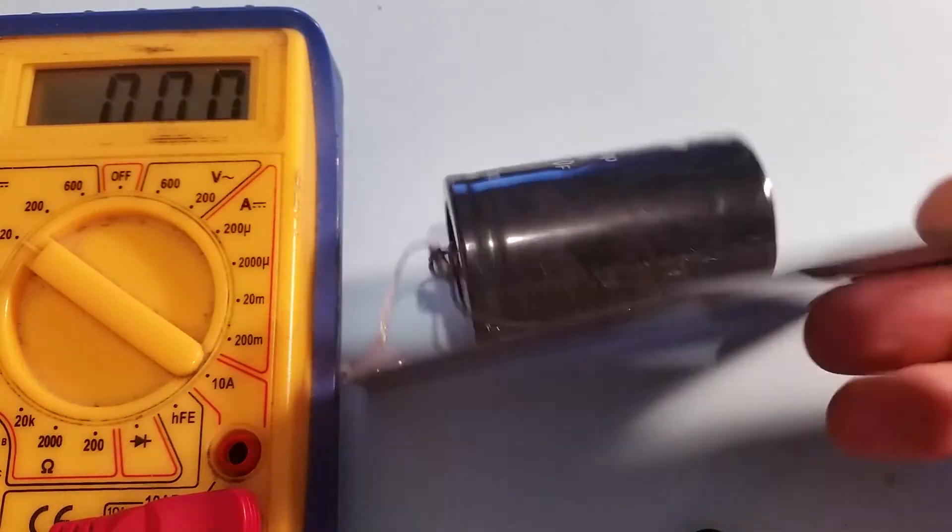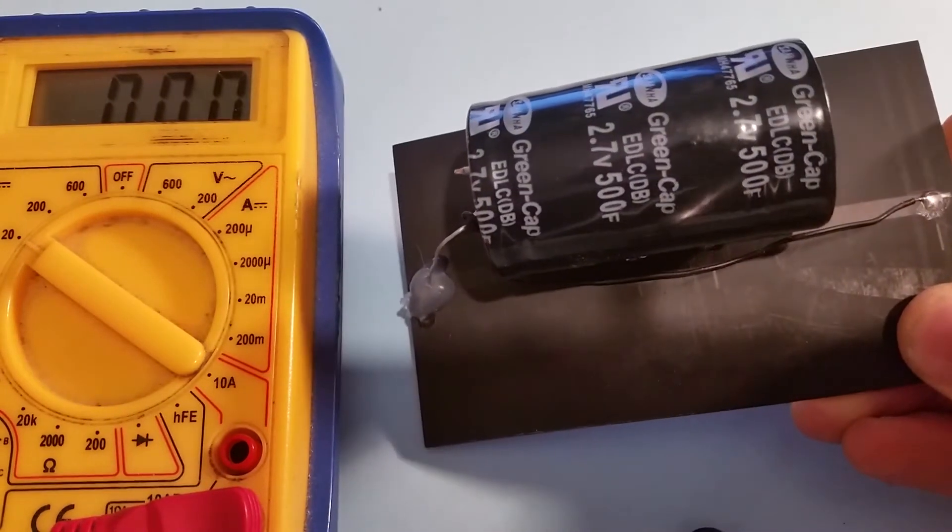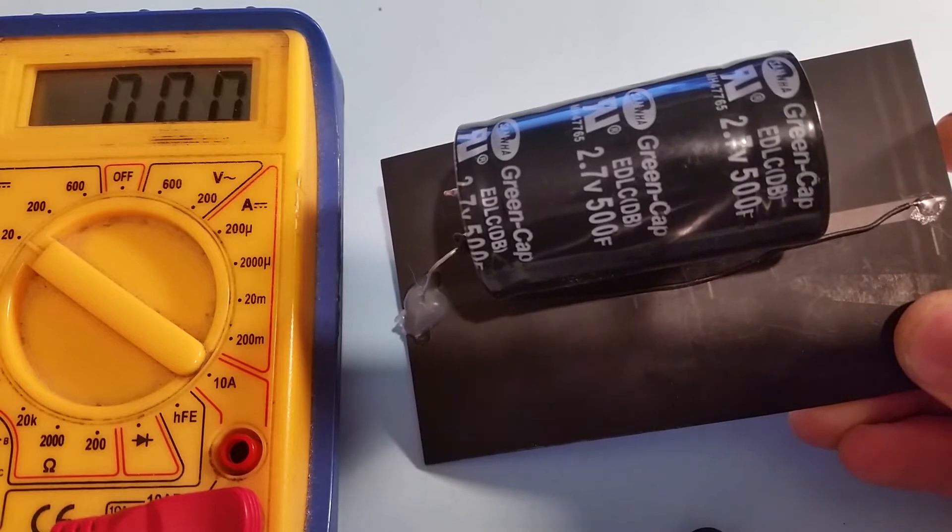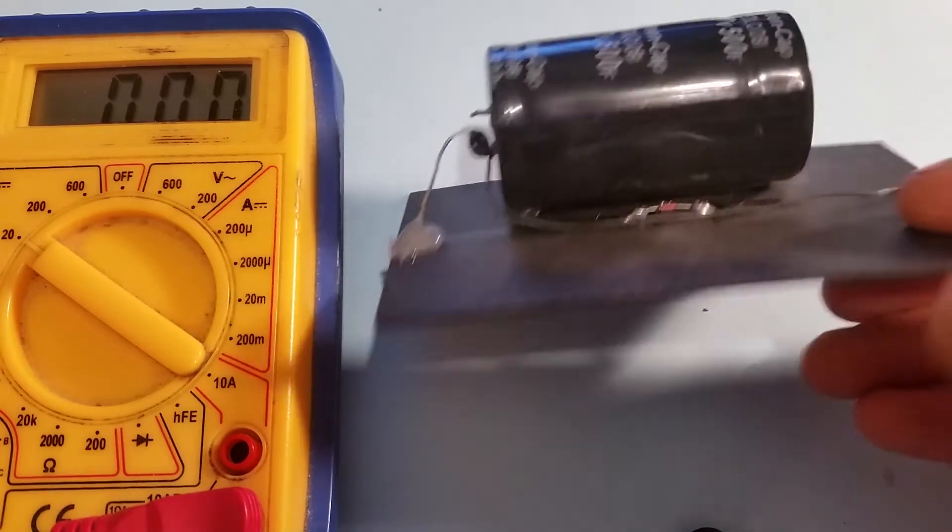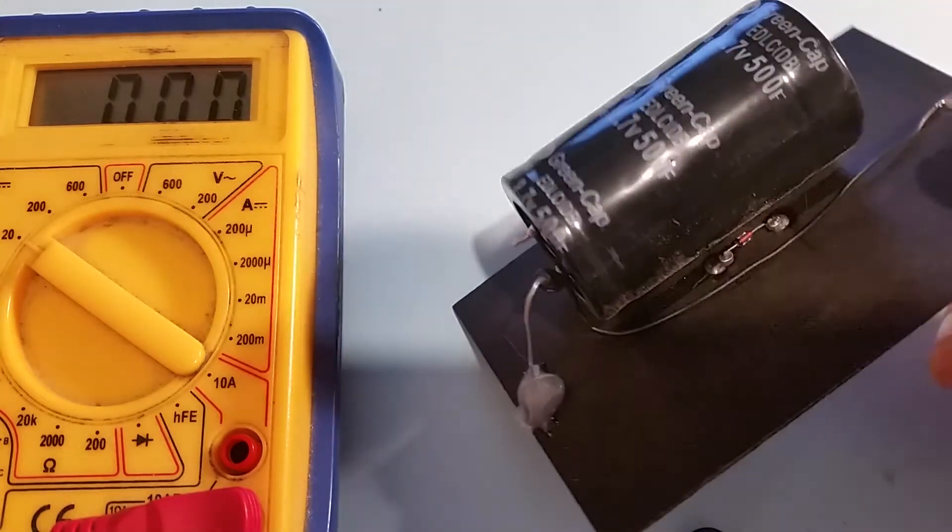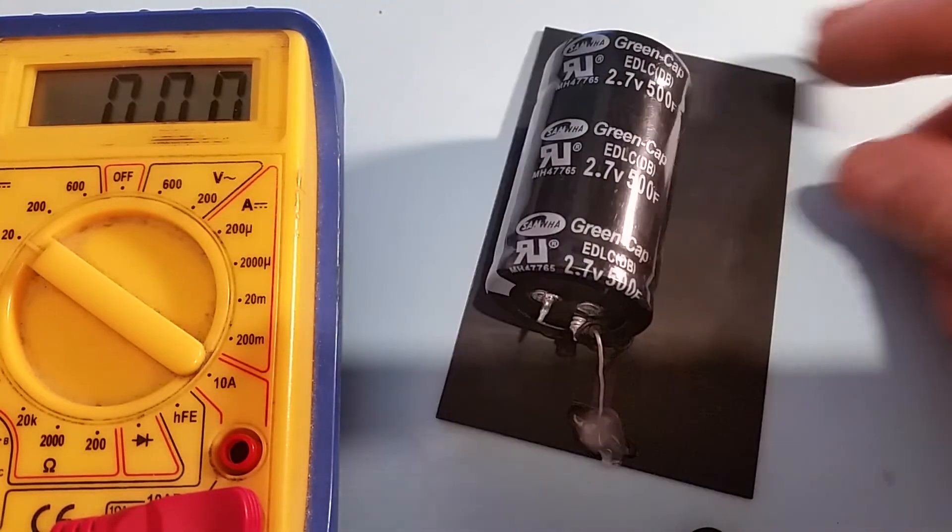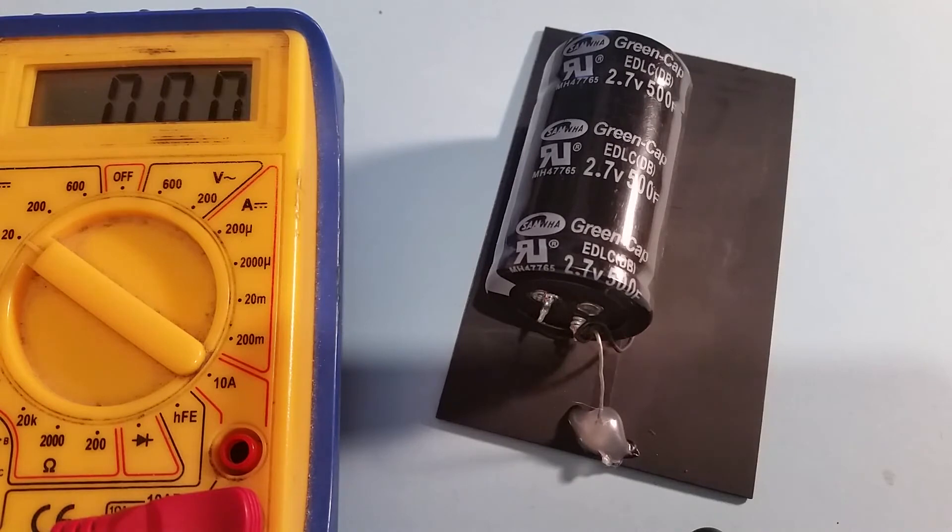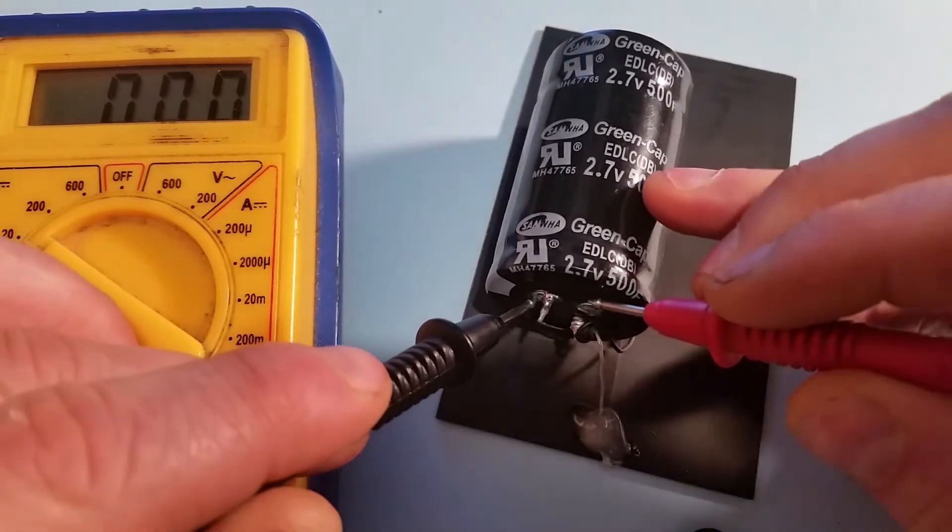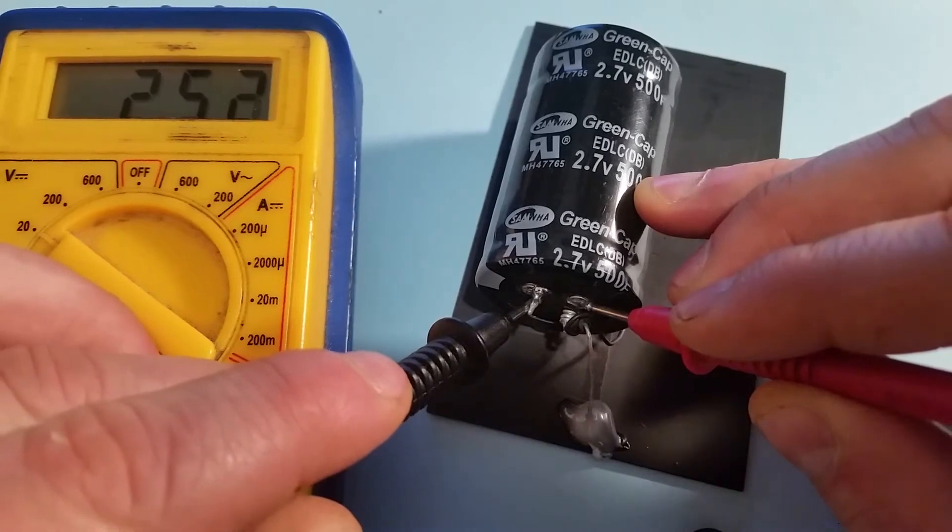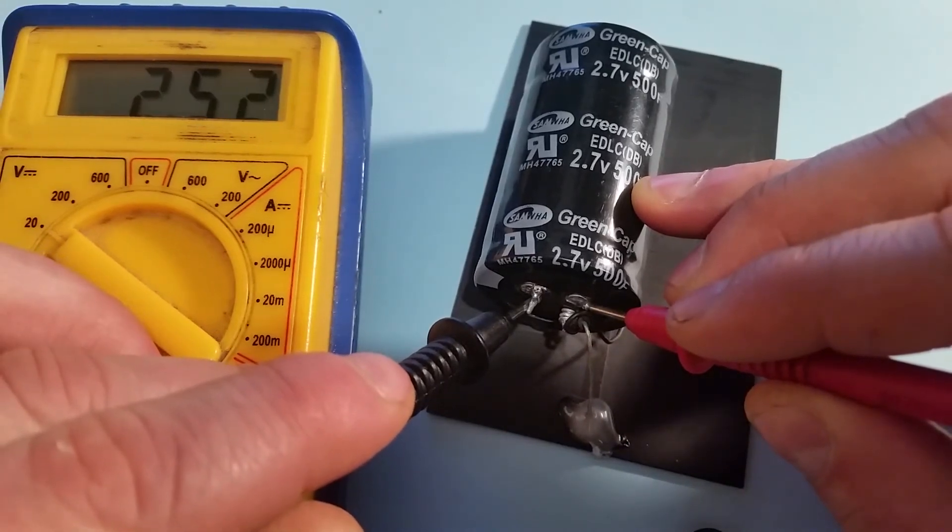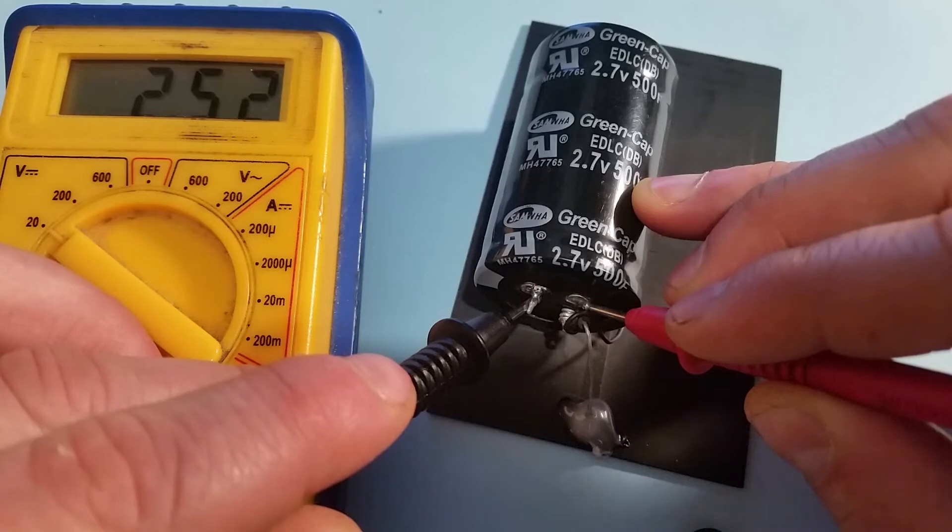Then I got some really big capacitors, so I went for 500 farad, 2.7 volts again. This make is Greencap. I put this one on a much bigger solar panel because I wanted to make sure it charged up well. So yesterday it charged up to 2.71 volts, so pretty much fully charged. If I take a measurement now, it's at 2.5 volts. So 2.51, say.